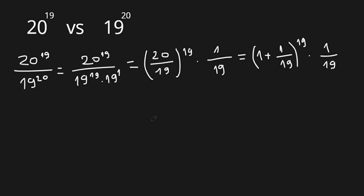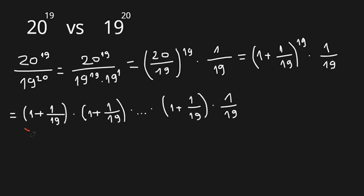So we have 1 plus 1 over 19, all to the power of 19, which means we write 1 plus 1 over 19 multiplied 19 times, and then times 1 over 19.